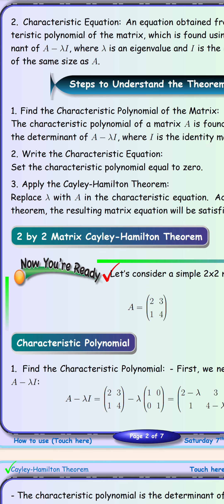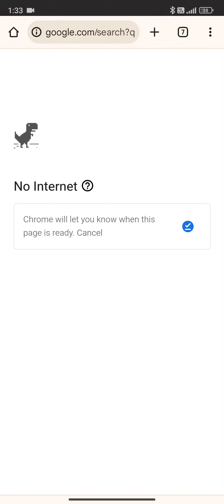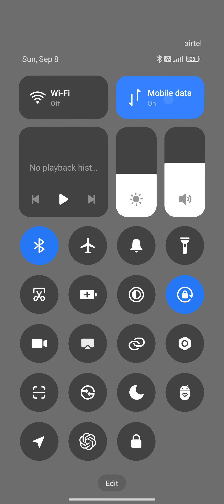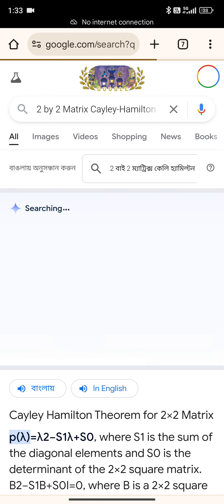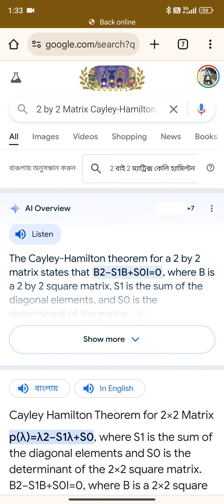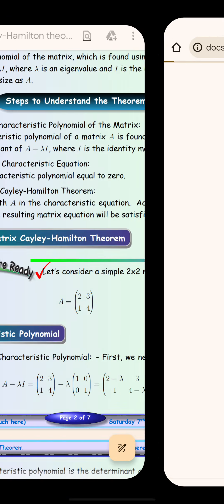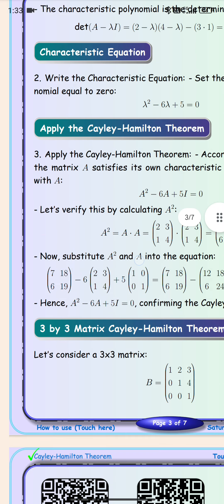The 2 by 2 matrix Cayley-Hamilton theorem is clickable. Once you click on it, it will search on Google with that context. Of course, you should have an internet connection. It searches on Google for the 2 by 2 matrix Cayley-Hamilton theorem.